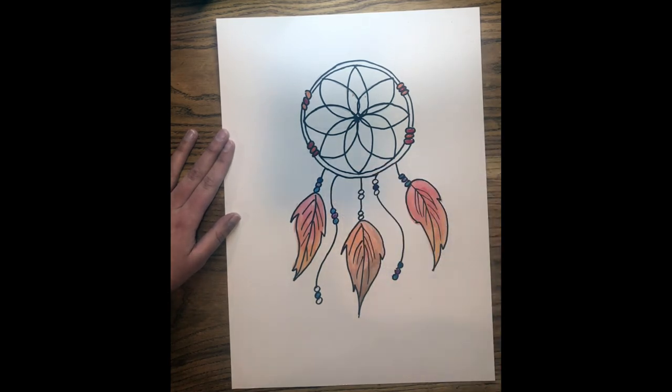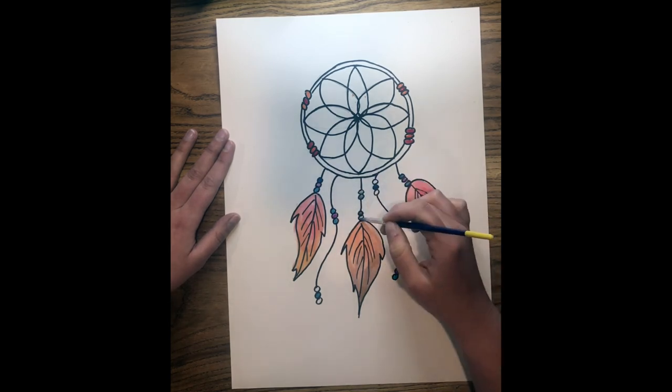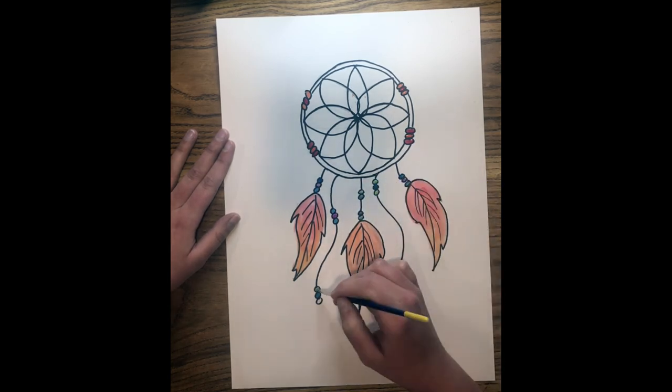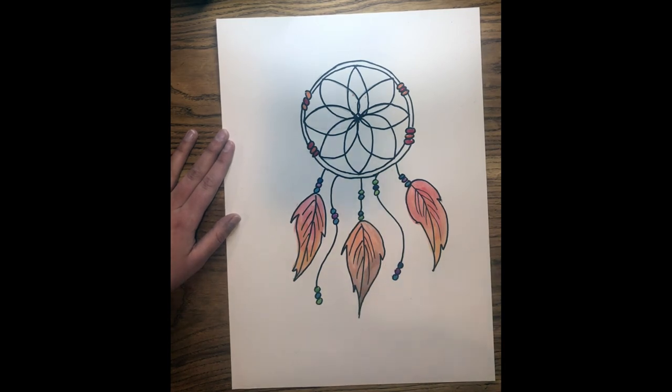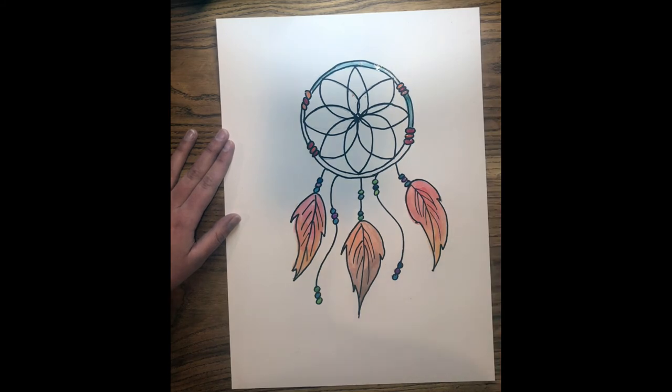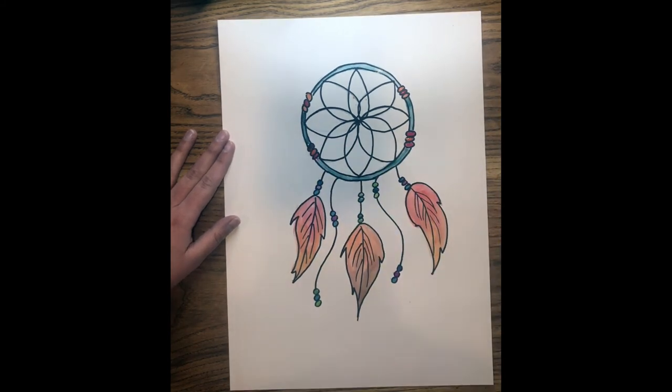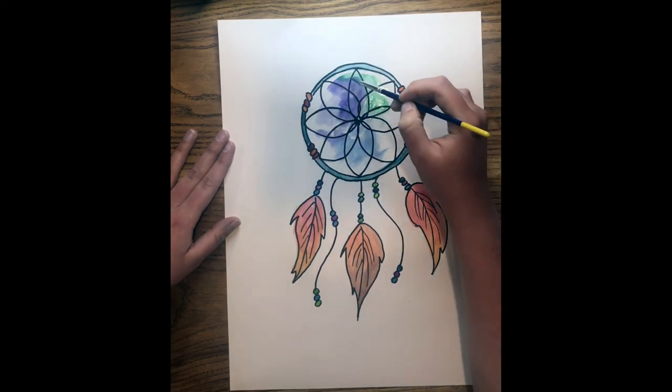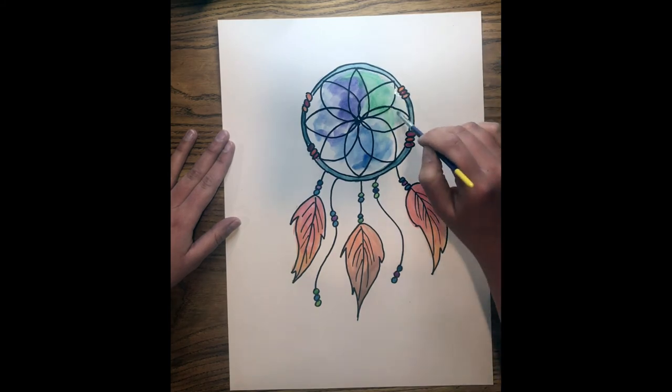And our cool colors are the blues, the purples, and the greens. Now you can do whatever colors you like. Maybe you want to switch them up and you want to do it different than Mrs. B and that is perfectly okay. Now I'm making my hoop blue right here. And I'm actually going to watercolor the inside of my web too just to make it a little bit more interesting and add some more color to it.